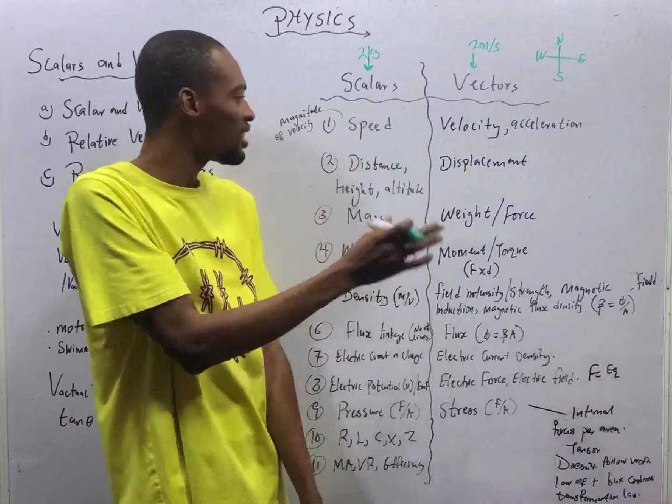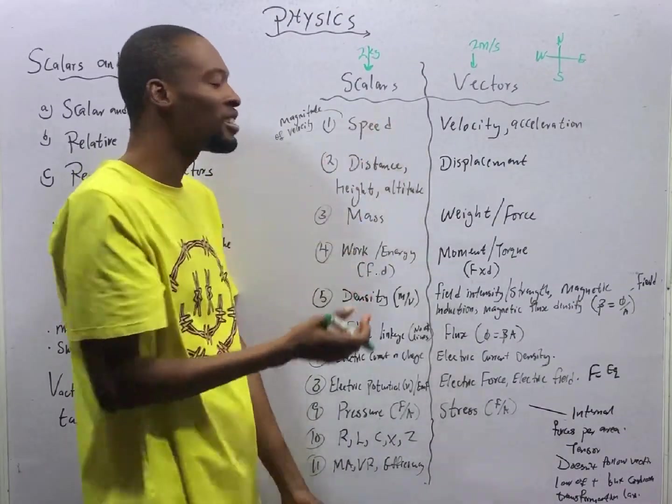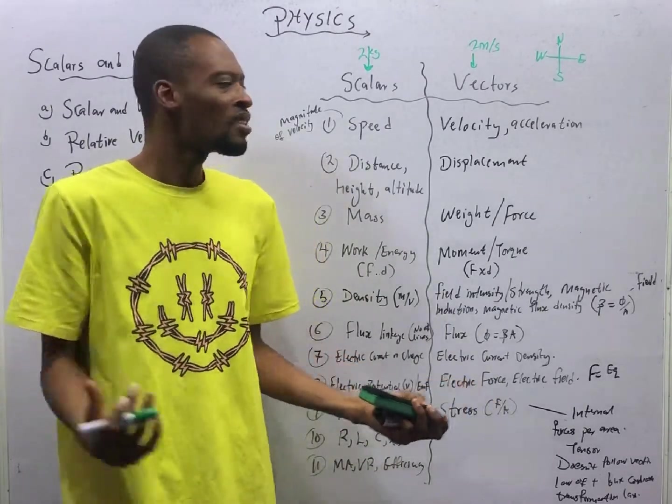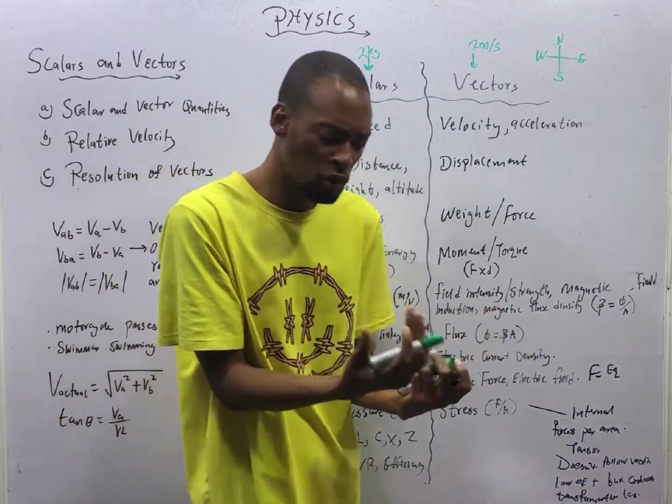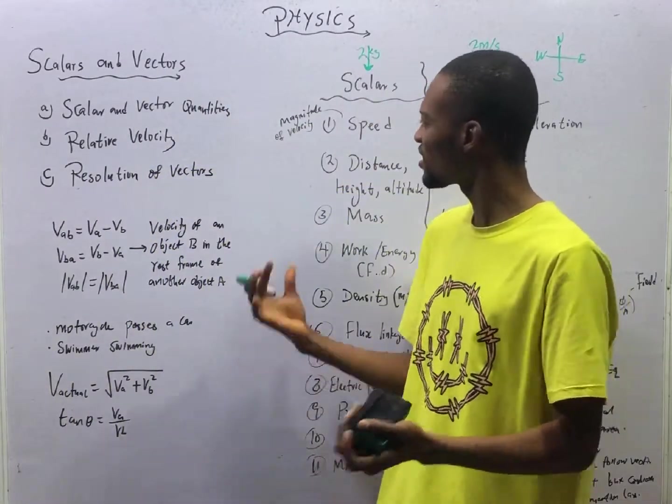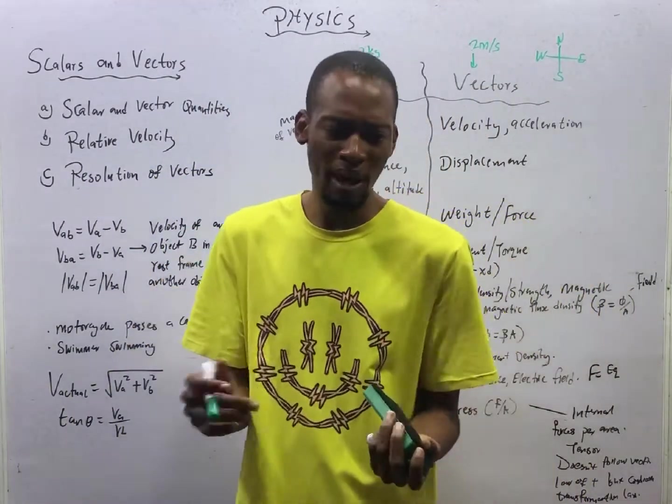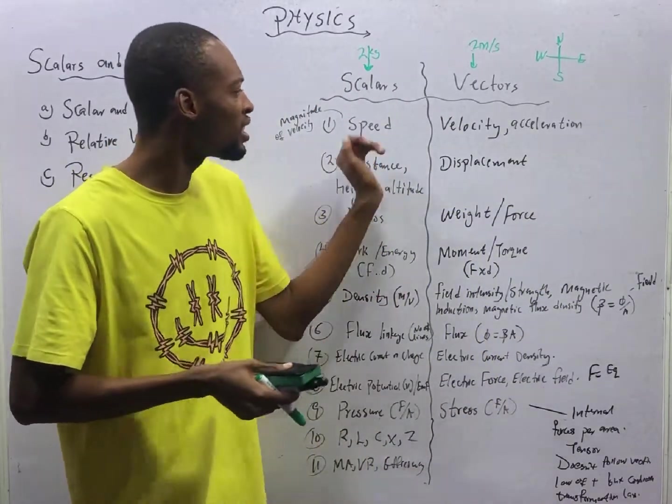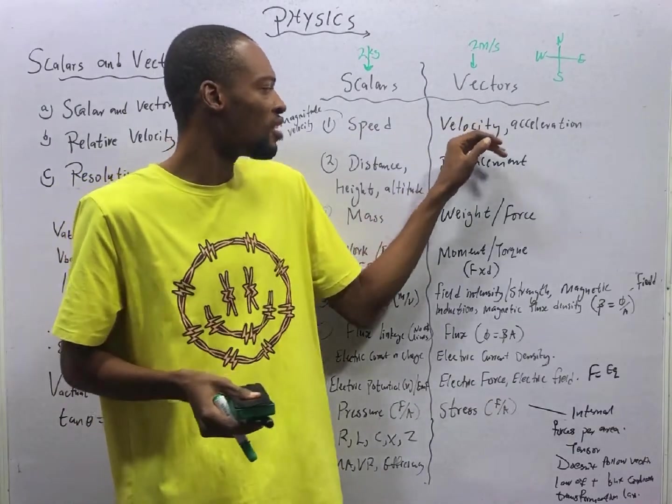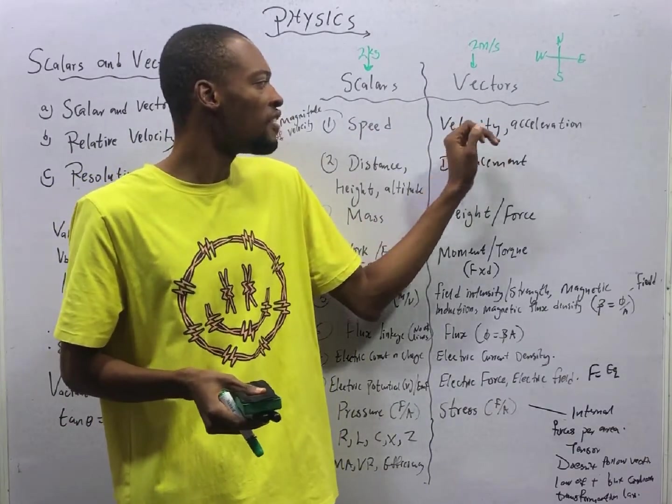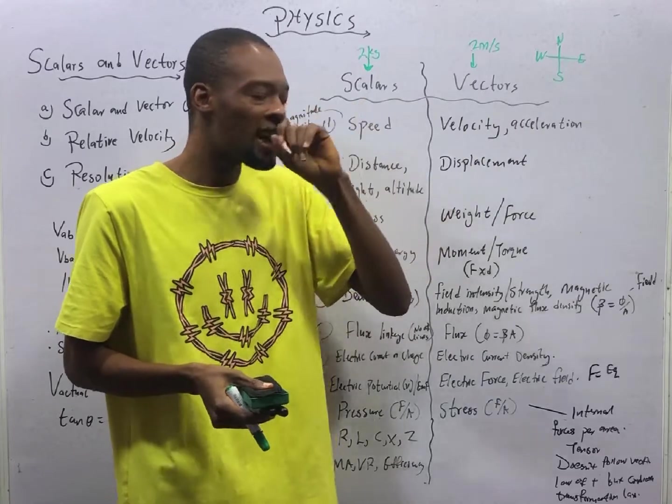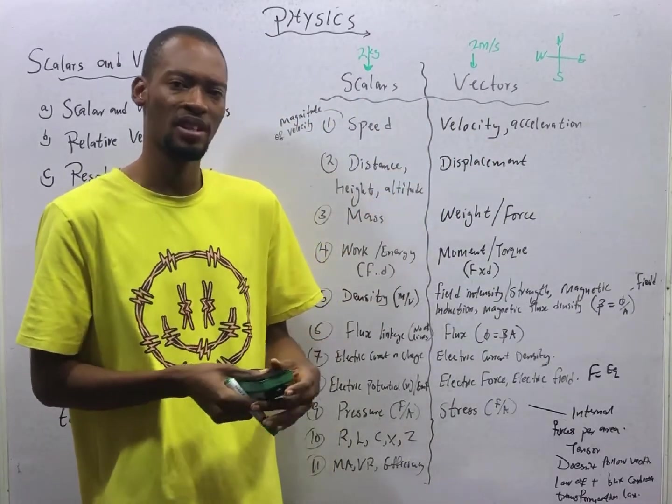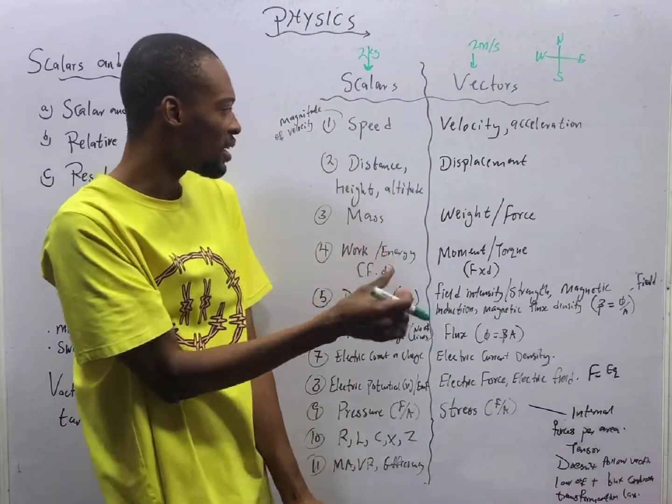The first scalar quantity we have here is speed. Speed is magnitude of velocity. Speed is distance over time. When you are describing speed, what you are concerned about is just the size, the value. We don't really bother about the direction. The part of speed where direction is important is when speed becomes velocity. Because velocity and acceleration, they are vector quantities. Velocity is displacement over time.